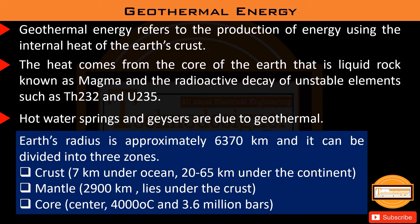The radius of the Earth is approximately 6,370 kilometers and it can be divided into three zones: the crust, which is seven kilometers under the ocean and 20 to 65 kilometers under the continent; the mantle, which is 2,900 kilometers thick and lies under the crust; and the core, which is the center of the Earth with a temperature of 4,000 degrees centigrade and 3.6 million bars of pressure.